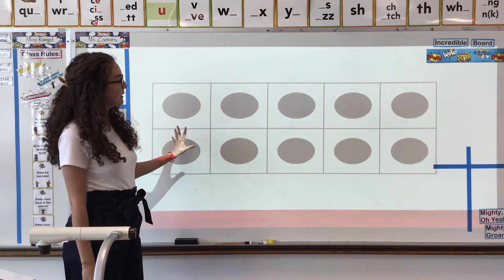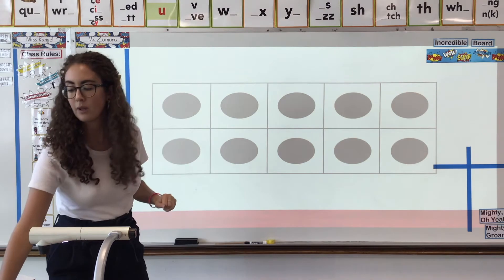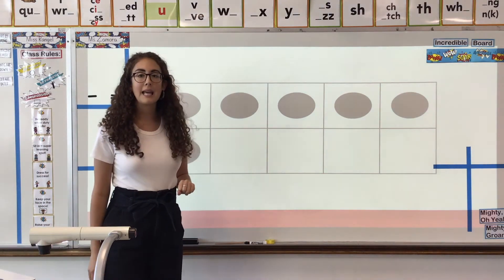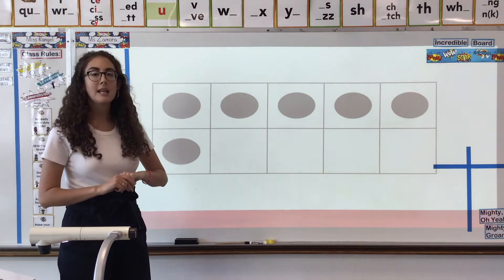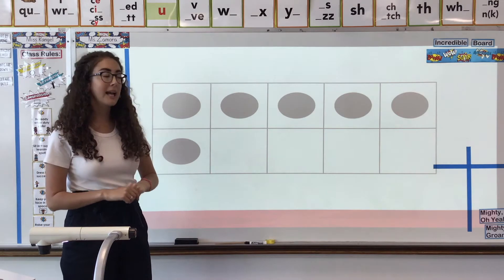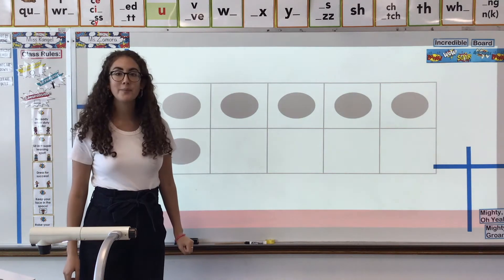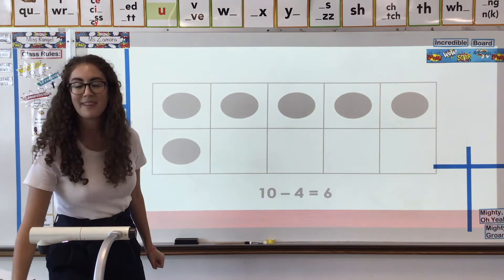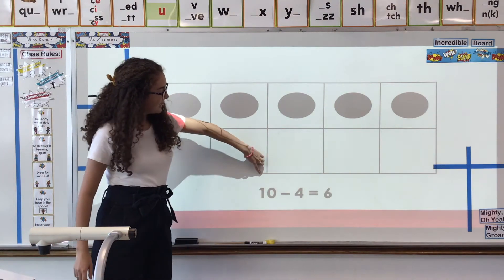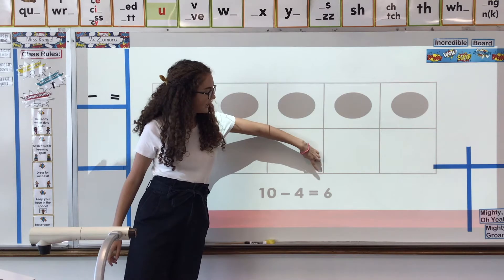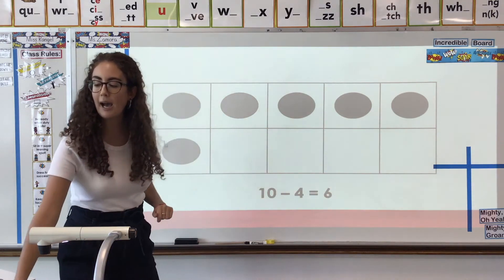So here we go. 10 minus 4 equals what? 10 minus 4 equals 6. Can we all say it with me? 10 minus 4 equals 6. Good job.